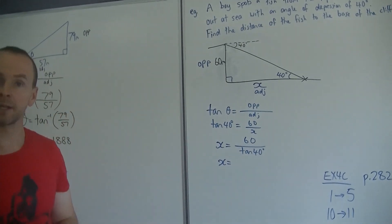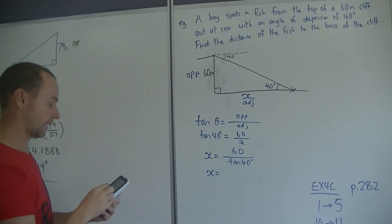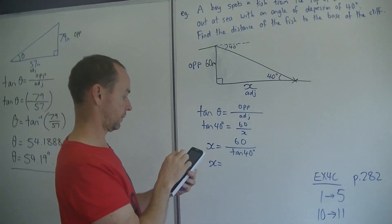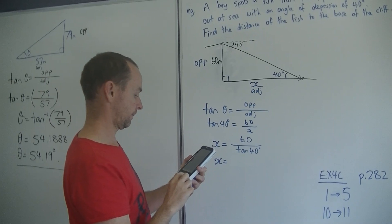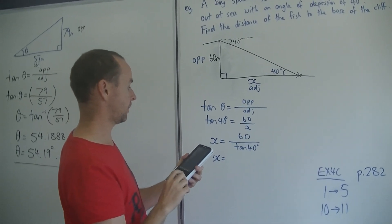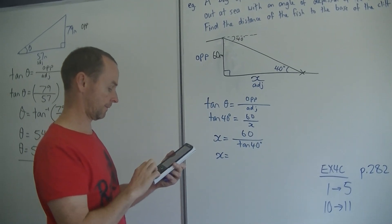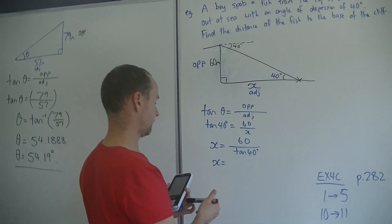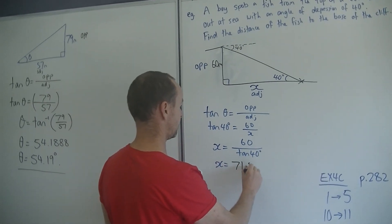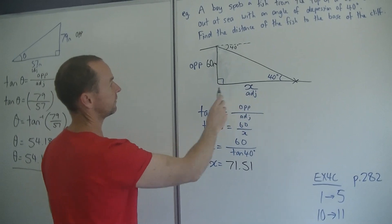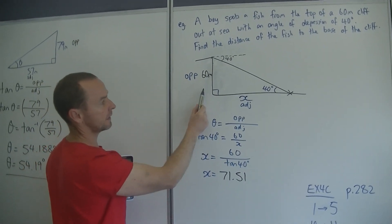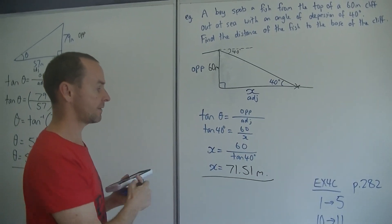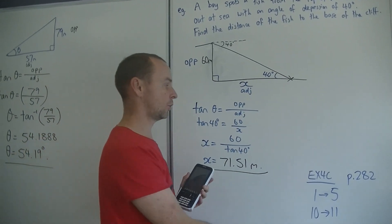Tan 40 degrees equals 60 over x. X is on the bottom line, so we do the switch thing again: x equals 60 over tan 40 degrees. That is all your workings out you need - then, and only then, can you get your calculator. Type in 60 divided by tan 40 and I get 71.51. Is it a sensible answer? That's 60 metres tall, 71.51 metres across - yes, it's a sensible answer. Answer that in words.